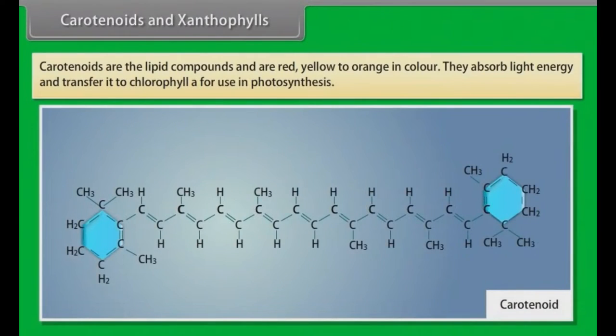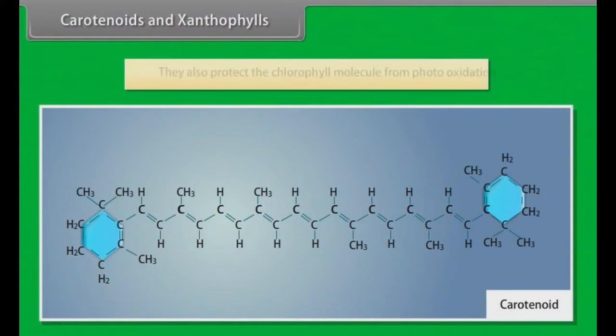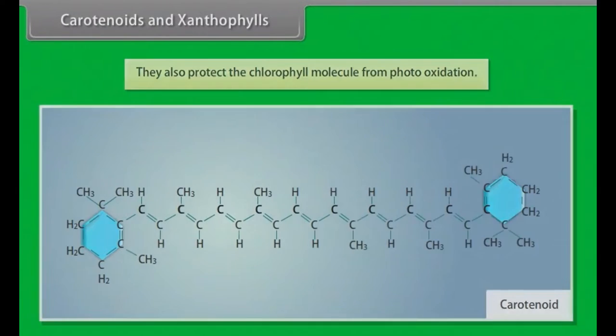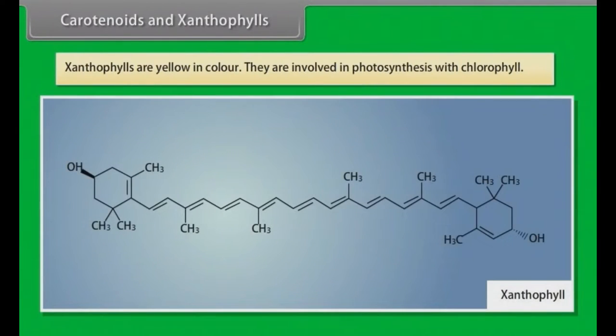Carotenoids and Xanthophylls: Carotenoids are lipid compounds and are red, yellow to orange in color. They absorb light energy and transfer it to chlorophyll A for use in photosynthesis. They also protect the chlorophyll molecule from photo-oxidation. Xanthophylls are yellow in color. They are involved in photosynthesis with chlorophyll.